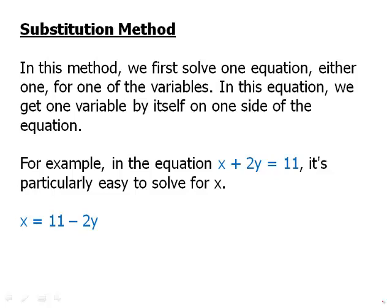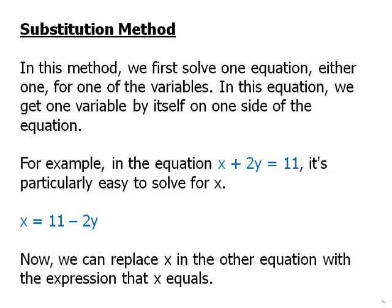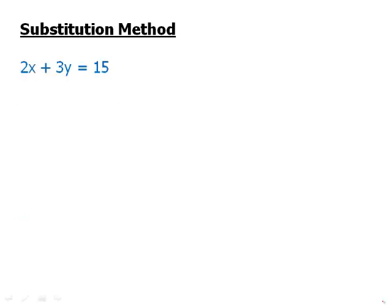Now let's look at the other equation. We can replace the x in the other equation with the expression that x equals. Because x equals 11 minus 2y, it means that wherever there is an x, we can remove the x and replace it by the thing that it equals. So here's the other equation, and we're just going to write the same equation again, but we're going to replace that x with 11 minus 2y. Well, now we have a single equation with y.